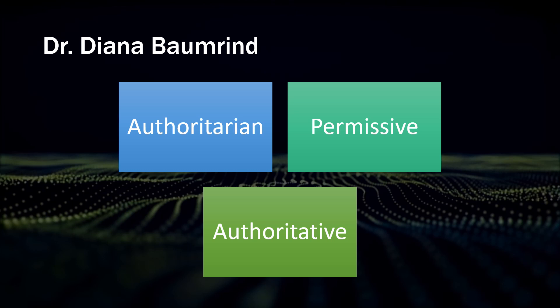The opposite of the authoritarian is the permissive type of parenting. Parents of this nature are very giving, to the point of spoiling their children. They tend to be warm and loving, with few expectations and minimal limitations, and they allow their children to participate in making family decisions.